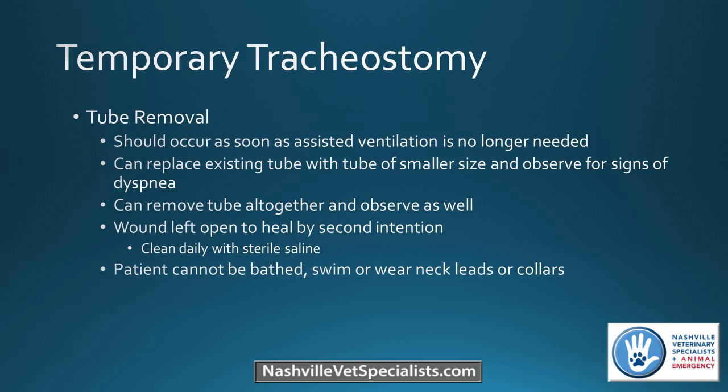Tube removal can occur as soon as the patient can breathe on their own. Some doctors downsize gradually — from a 6 French to a 4 French — to test tolerance. I usually just remove it and see how they do, keeping another tube available in case it needs to go back in. The wound is left open to heal by second intention. Once the tracheostomy tube is out, clean the site daily with saline. Owners must be told not to bathe the dog, swim, or use neck leads or collars until the site heals.